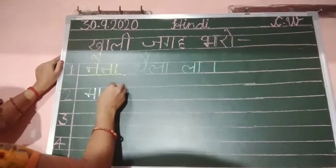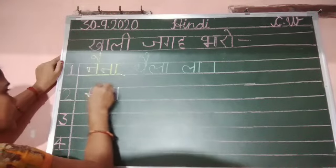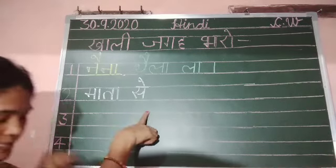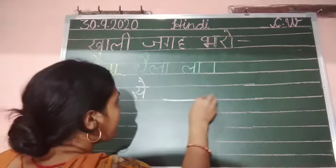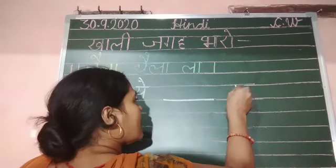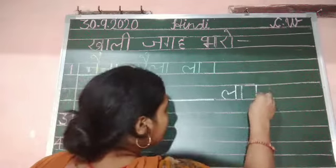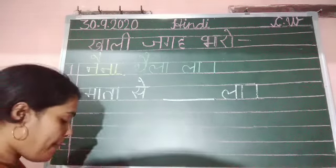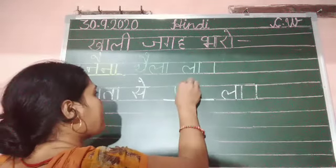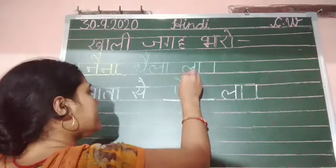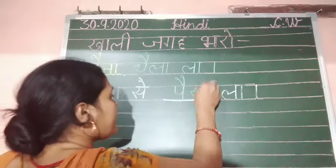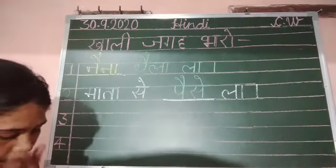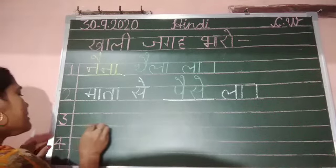Number 2 is: 'maa par aa ki maatra' — maa, 'ta par aa ki maatra' — ta, so माता (maata). Then the blank: 'se,' then 'la.' So we fill: माता से पैसे (maata se paise). Write 'pa par aa ki maatra sa par aa ki maatra' — पैसे (paise).